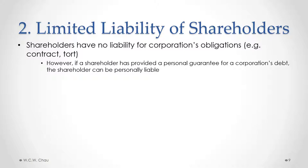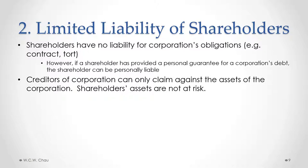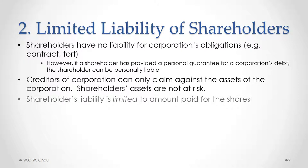Quite often a bank will ask for that personal guarantee, especially if the corporation — which is the borrower — does not have a sufficient credit rating, or doesn't have sufficient assets or a revenue history for the bank to confidently lend without that guarantee. The creditors of the corporation can only claim against the assets of the corporation, since the corporation is the one that owes the money, not the shareholder. So the shareholder's personal assets are not at risk unless the shareholder has provided a personal guarantee. A shareholder's liability is limited to the amount paid for his or her shares.